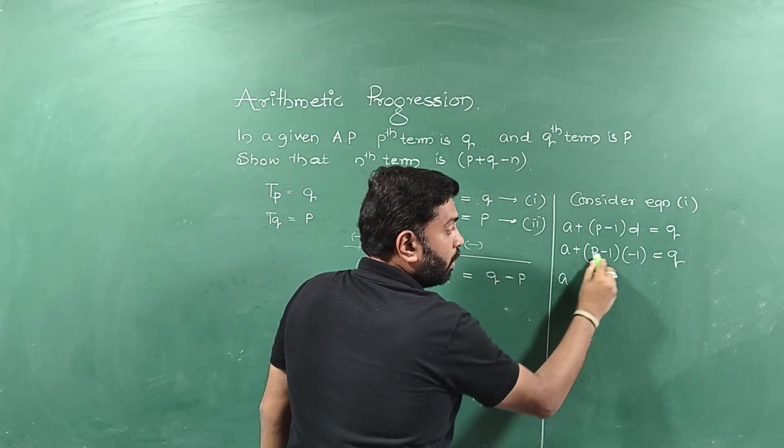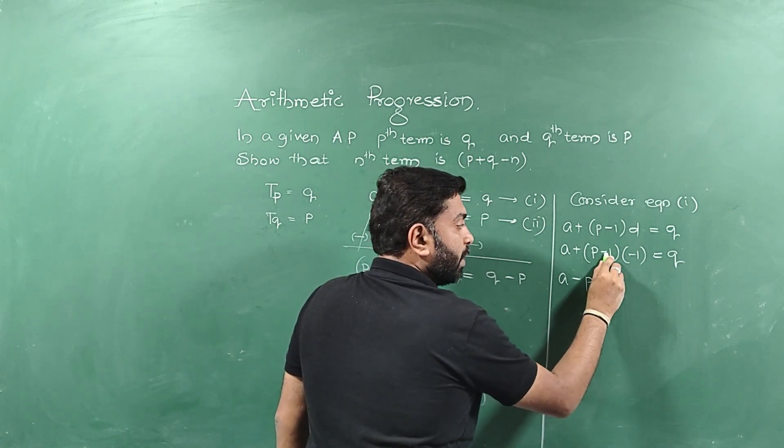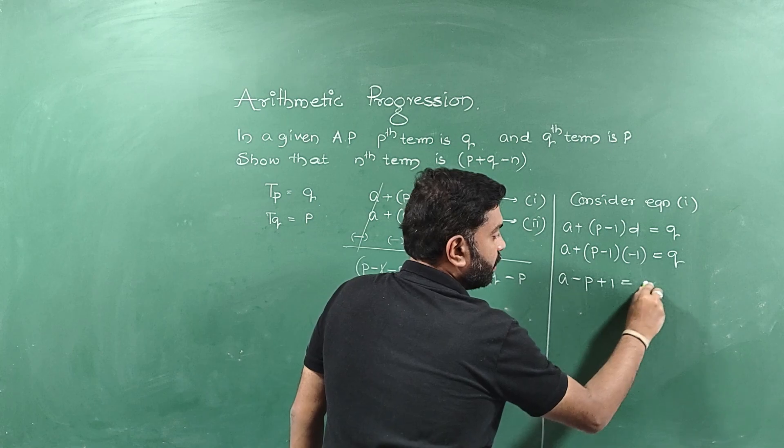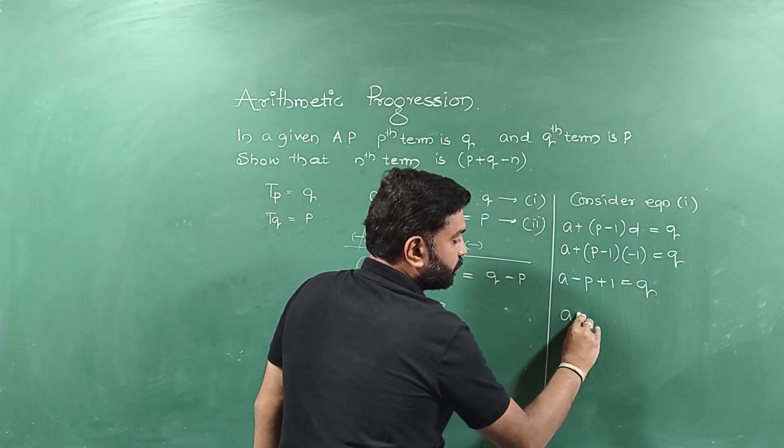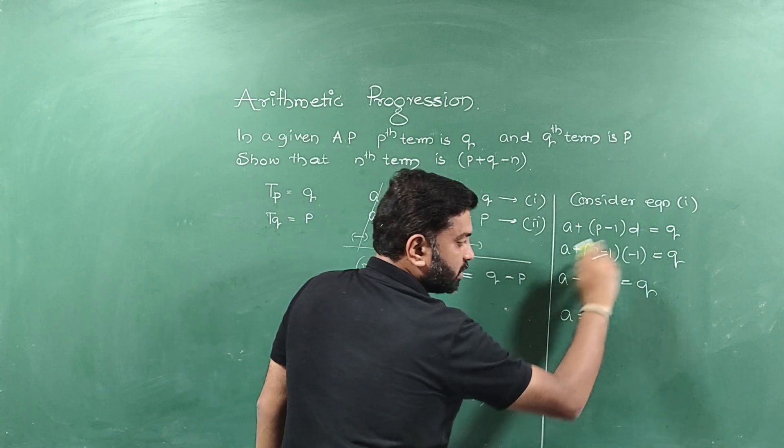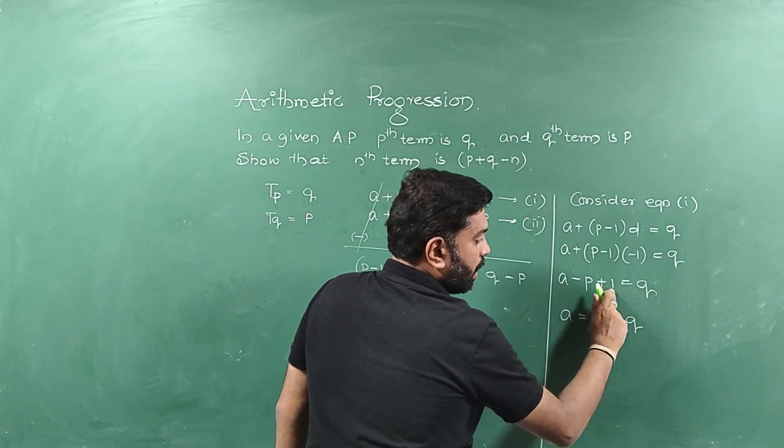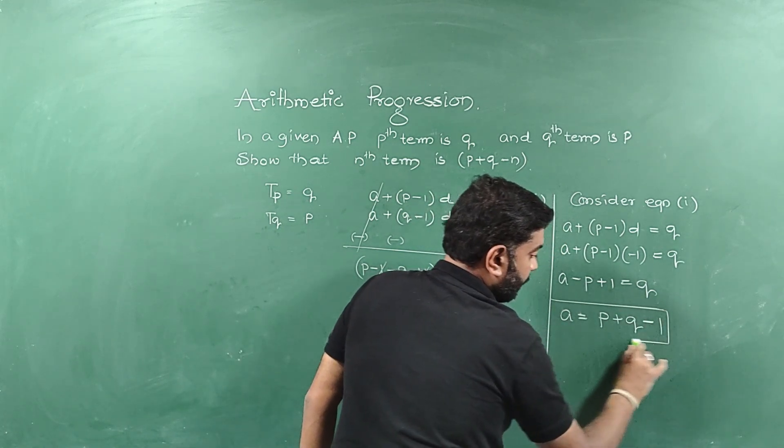Next P into minus 1. Can I write minus P? Next minus 1 into minus 1 is nothing but plus 1, is equal to Q. I want A. Therefore, I want to shift all the terms. Minus P, if I shift it, becomes plus P. And this is Q. And this is minus 1. This is value of A.